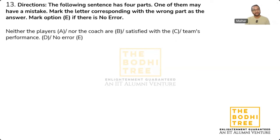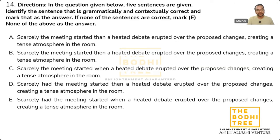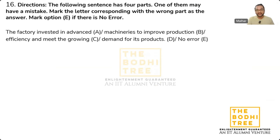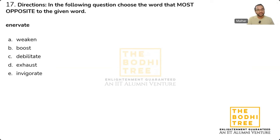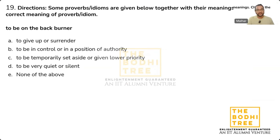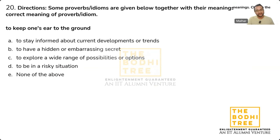Question no. 14 is a sentence improvement ka question hai - five sentences diye rahenge, un mein se ek correct hai, woh aapko mark karna hai. Question no. 15 again sentence improvement. Question no. 16 is error detection. Question no. 17 mein aapko antonym batana hai, most opposite batana hai. Question no. 18 again most opposite. Question no. 19 and 20 idioms and phrases.